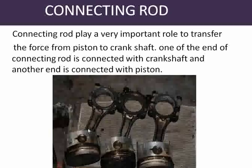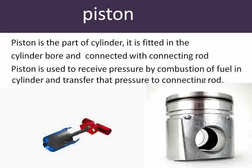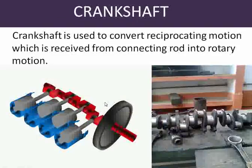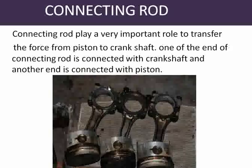Here you see the connecting rod — one end is connected with the piston and the other end is connected with the crankshaft. The role of the connecting rod is to simply transfer the force from the piston to the crankshaft. It converts the reciprocating motion into rotary motion.